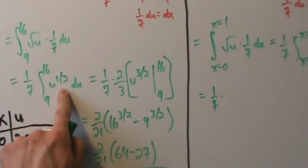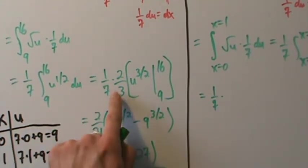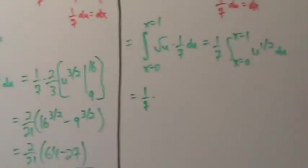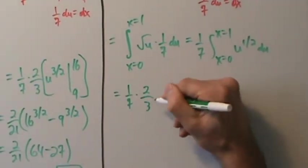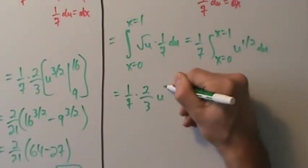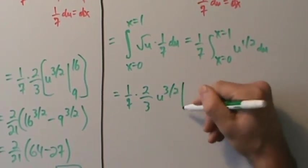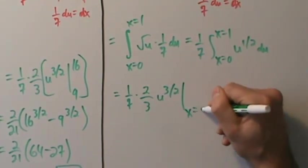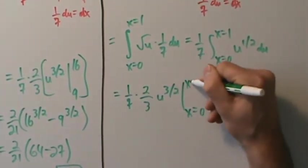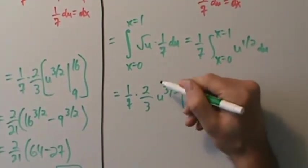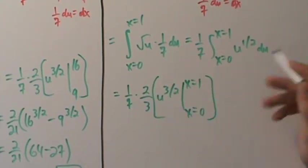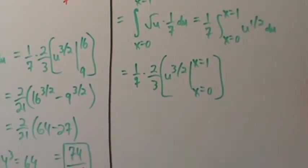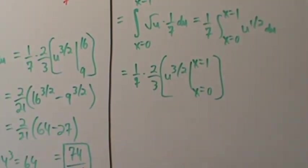We get (2/3)u^(3/2), evaluated from x = 0 to x = 1. To evaluate it like this, we have to go back to our expression for x and substitute u = 7x + 9 back in.